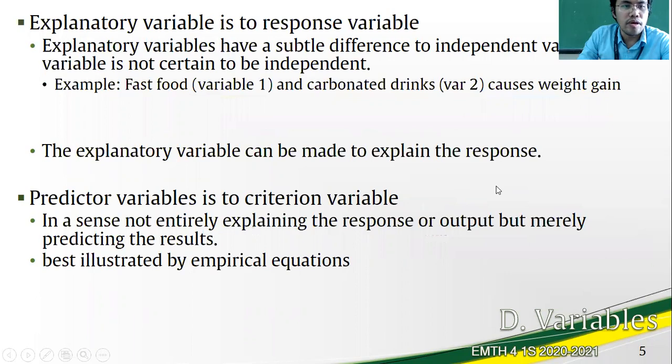We are going to focus on the explanatory and predictor variables. They have their counterparts on the dependent side, the response and criterion respectively. The explanatory variable is a type of independent variable made to explain the effects to a response variable. While the explanatory variable is also called an independent variable, a difference exists because at times variables are not fully independent.